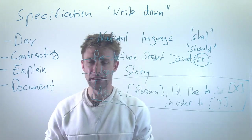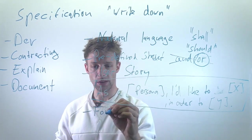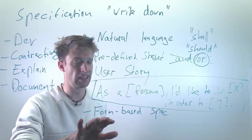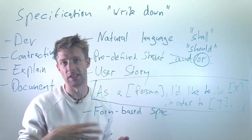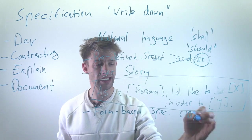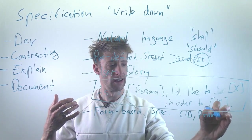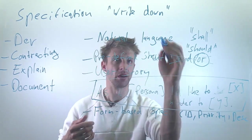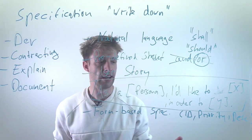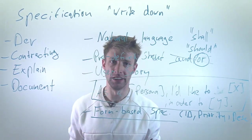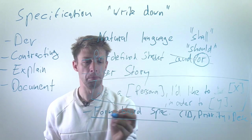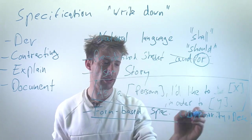Another approach is form-based specification — similar to filling out a registration form online. Every requirement has a set of predefined fields: an ID, a priority, a description such as a natural language sentence, and optional fields. This is essentially the standard in all requirements engineering tools, which embed natural language statements or user stories into a form structure with additional important metadata.